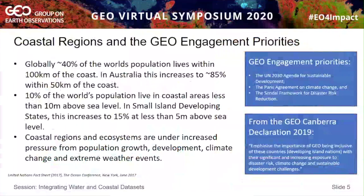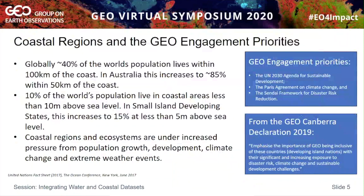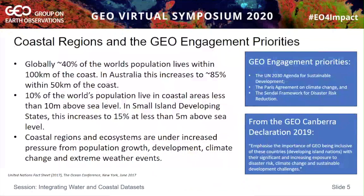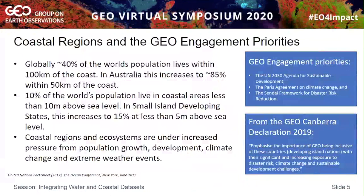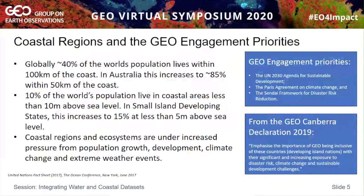How do coastal regions relate to geo priorities? Globally, 40% of the world's population lives within 100km of the coast. In Australia, this increases to about 85% within 50km of the coast. These products are Australia-centric, but being on an ODC platform, we're looking to take them internationally. Now, 10% of the world's population lives in coastal areas less than 10 metres above sea level — even more in developing island nations. These places are at risk from climate change, more susceptible to disaster impacts such as storm surge, and under increased pressure from population growth and development. The GeoCanberra Declaration included discussions recognising the significantly increased risk for these island nations, and the datasets we're developing are easily applicable to those countries.